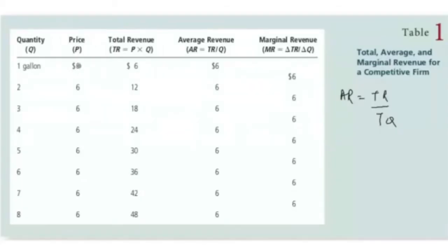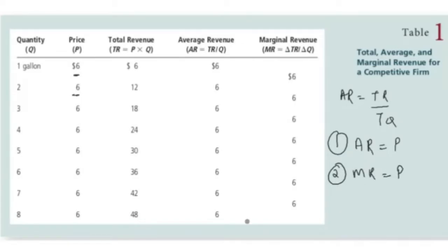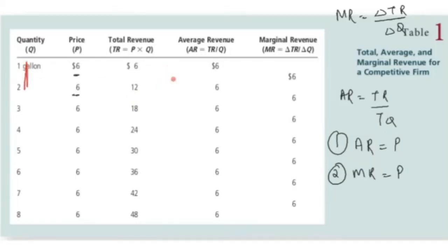The first important result you can establish from this table is that for a competitive firm, average revenue is always equal to the price of the commodity. The second result is that marginal revenue is also equal to price. Marginal revenue is the change in total revenue divided by the change in quantity. When selling the first unit, total revenue was six; selling the second unit, total revenue increased to twelve. Change in total revenue is twelve minus six equals six, divided by change in quantity of one, so marginal revenue is six.